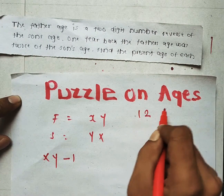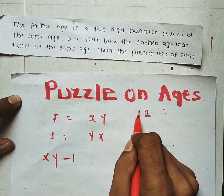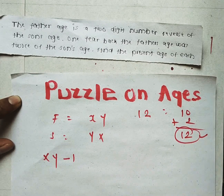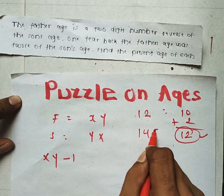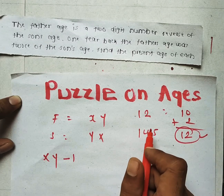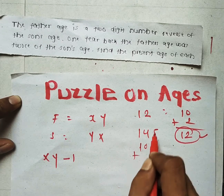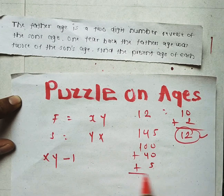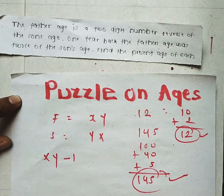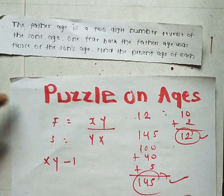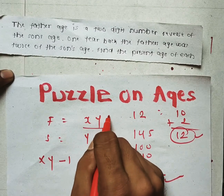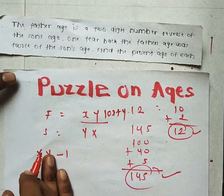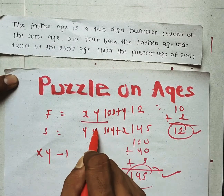If I say 12, we know that 1 is at the 10th place, so 10, and 2 is at the unit place, so 2 — that's how 12 comes. Similarly, for a two-digit number XY, I can write it as 10x plus y, and for the son's age YX, I can write it as 10y plus x.